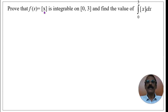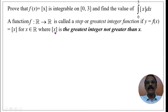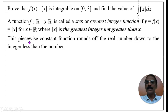Prove that the step function f(x) is integrable on the closed interval [0, 3] and find the value of the integral from 0 to 3 of the step function of x dx. A function f from R to R is called a step or greatest integer function if y = f(x) = [x] for x belonging to R, where [x] is the greatest integer not greater than x. This piecewise constant function rounds off the real number down to the integer less than x.